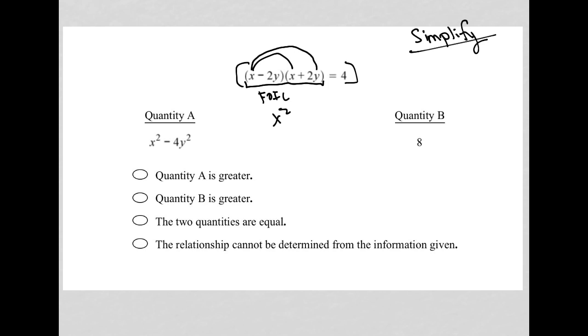outer times outer, which is 2xy, so positive 2xy, inner times inner, which would be negative 2xy, and last term times last term here, which is minus 4y squared.